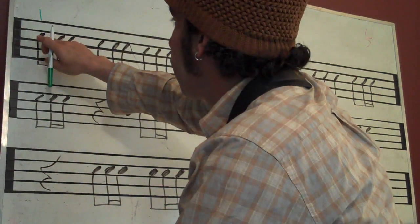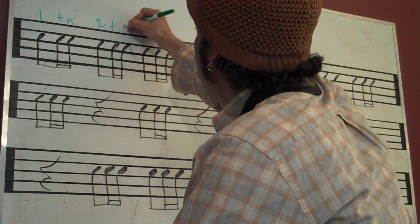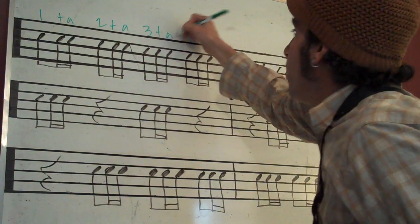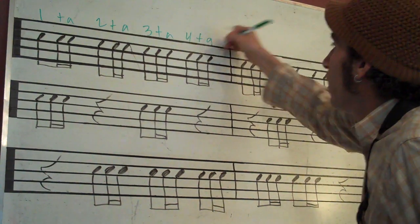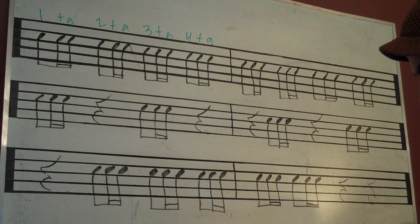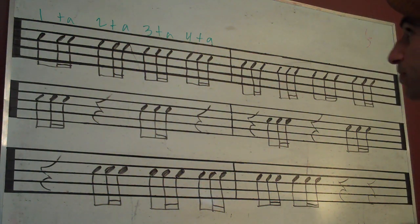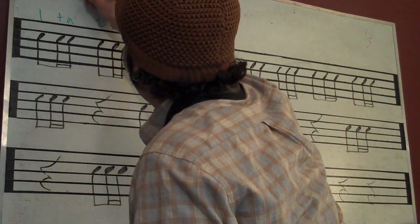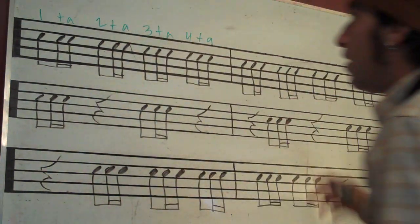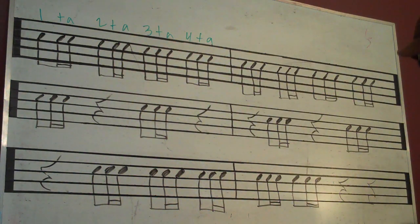So you've got one and a two and a three and a four and a. We're just going to count this little exercise. We'll start the metronome. This is at 50 BPM — quarter note equals 50. Hopefully you can see that up on there; it just says quarter note 50.